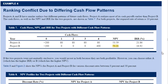Finishing this LOS by looking at CFA curriculum examples. Example four covers ranking conflict due to differing cash flow patterns. Project A and Project B both have an initial outflow of negative 200. Project A has positive cash flows of 80 each year for four years, while Project B has a single payback of 400 in year four. Project B has a higher NPV but a lower IRR. If these were mutually exclusive, you would choose Project B because it has the higher net present value.